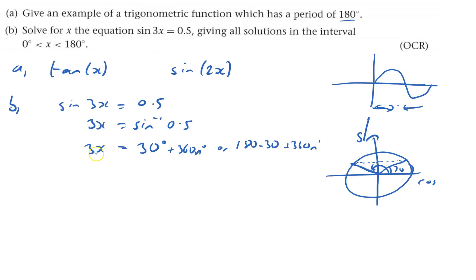Now you've got to divide by 3, because you don't want 3x's, you just want 1x. So x equals, divide by 3 is 10 degrees, plus 120n degrees.